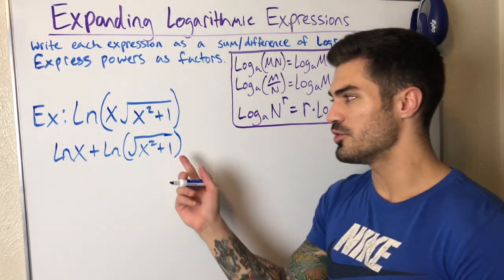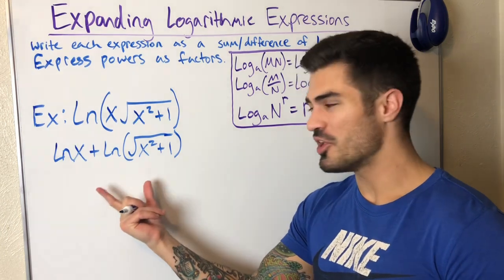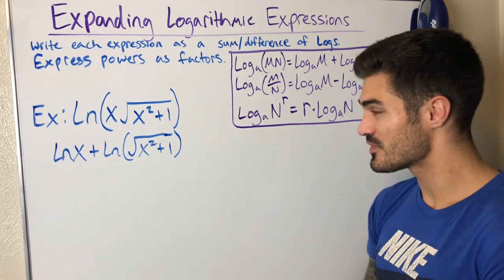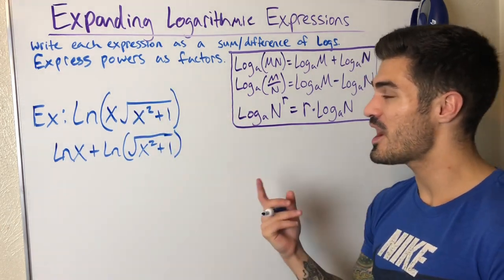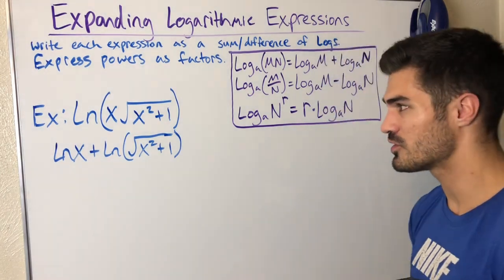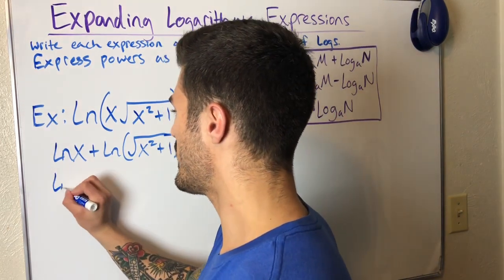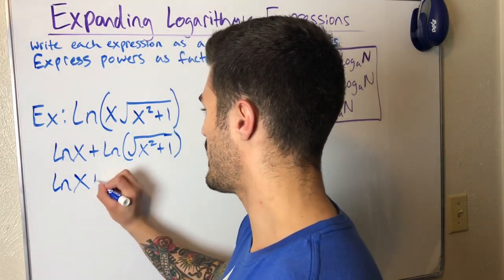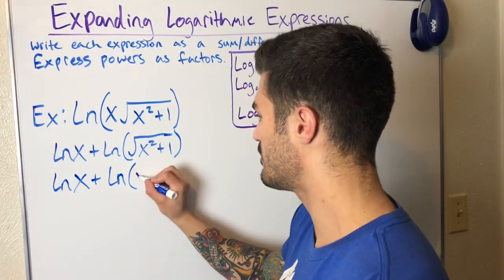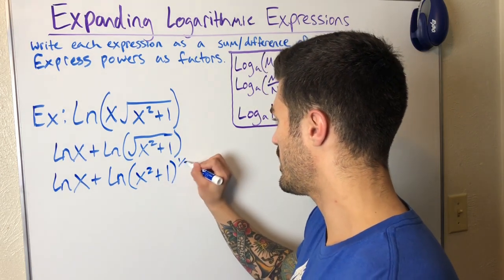So now what? Well, what is square root really? Because you may think we're done, but this can actually be rewritten as a power and we can bring our power out in front, because that's what the instructions tell us to do: express powers as factors. So if we left it like this we'd probably get points off. What can we write square root as? Well that's just one half power. And in general any kind of roots you have can be rewritten as some kind of power. So I have x squared plus one to the one half power.